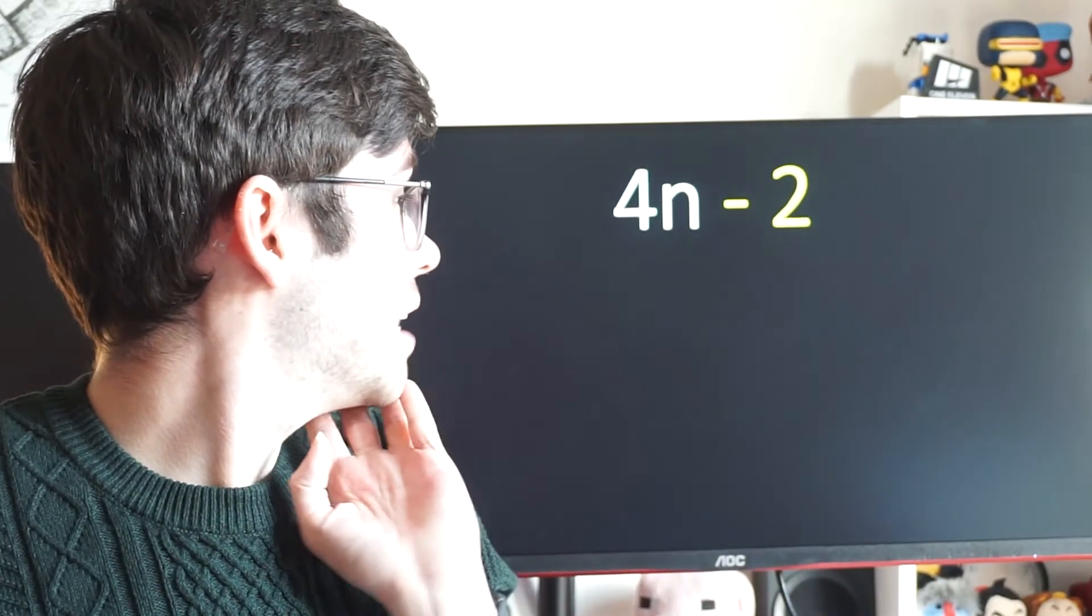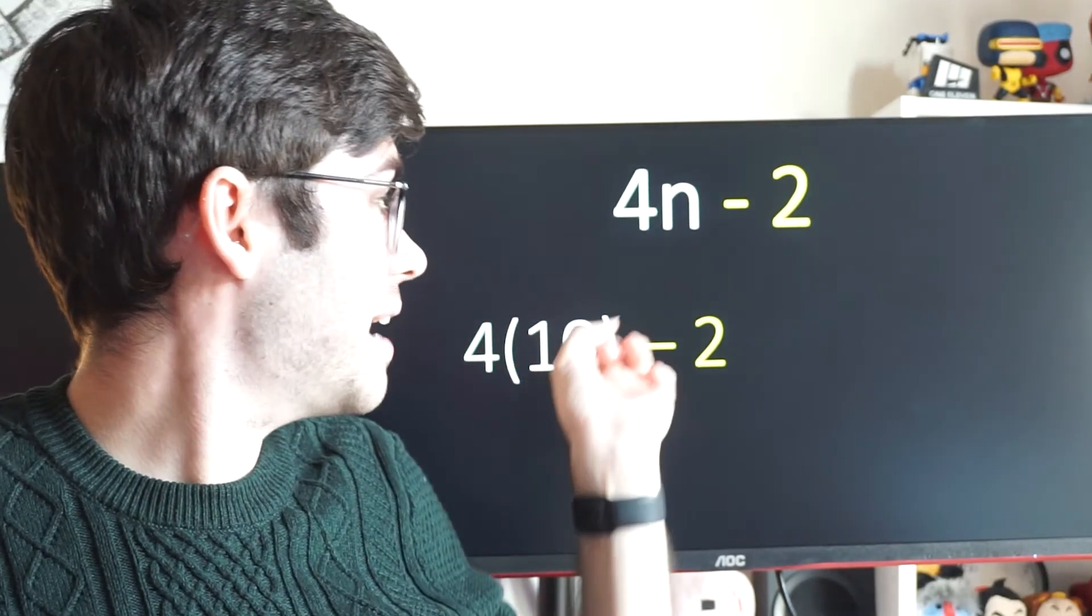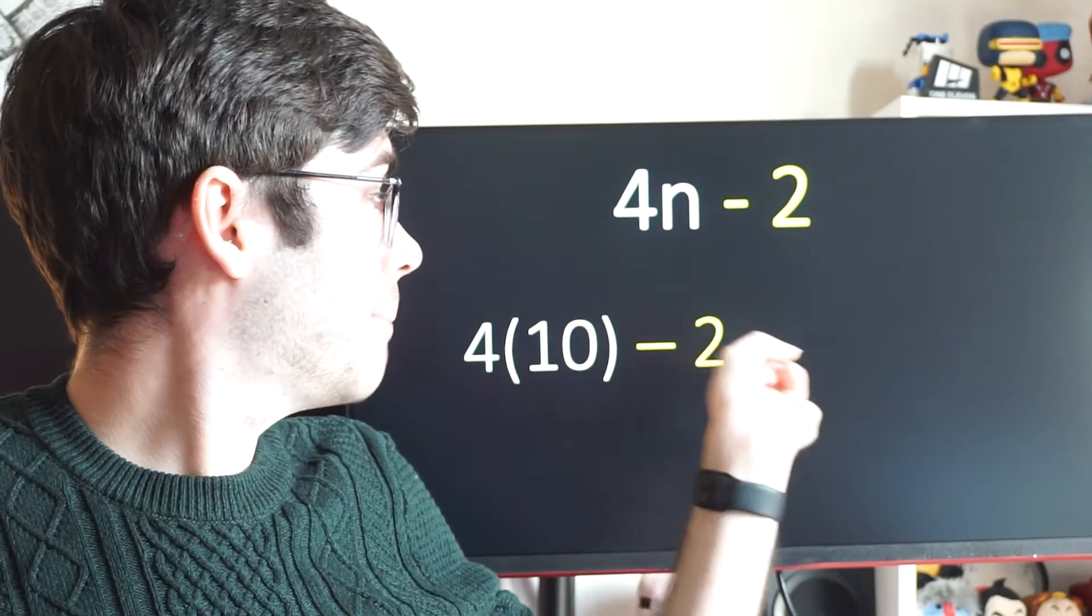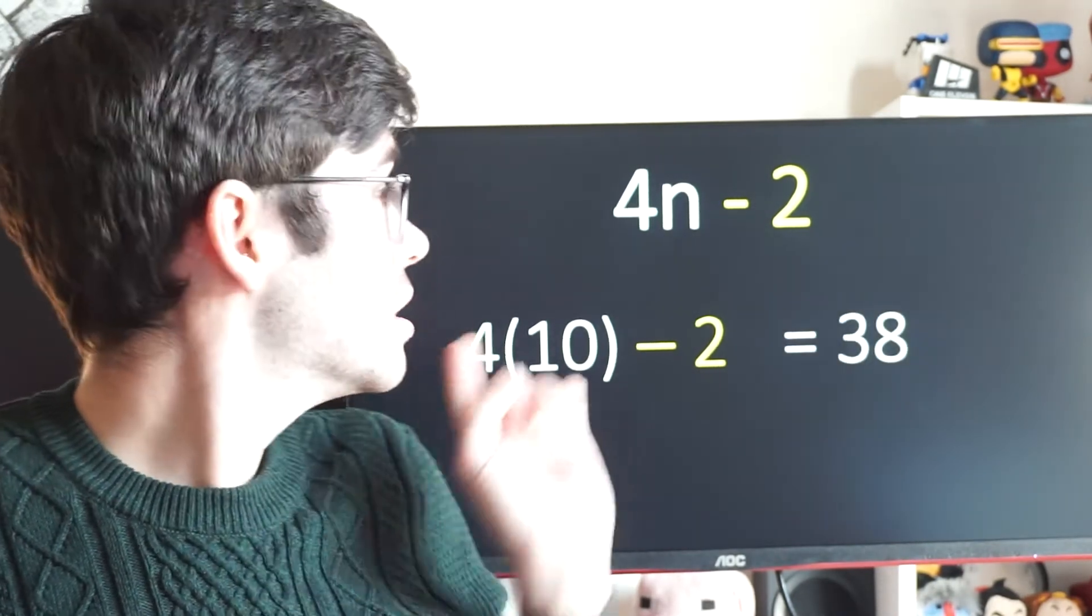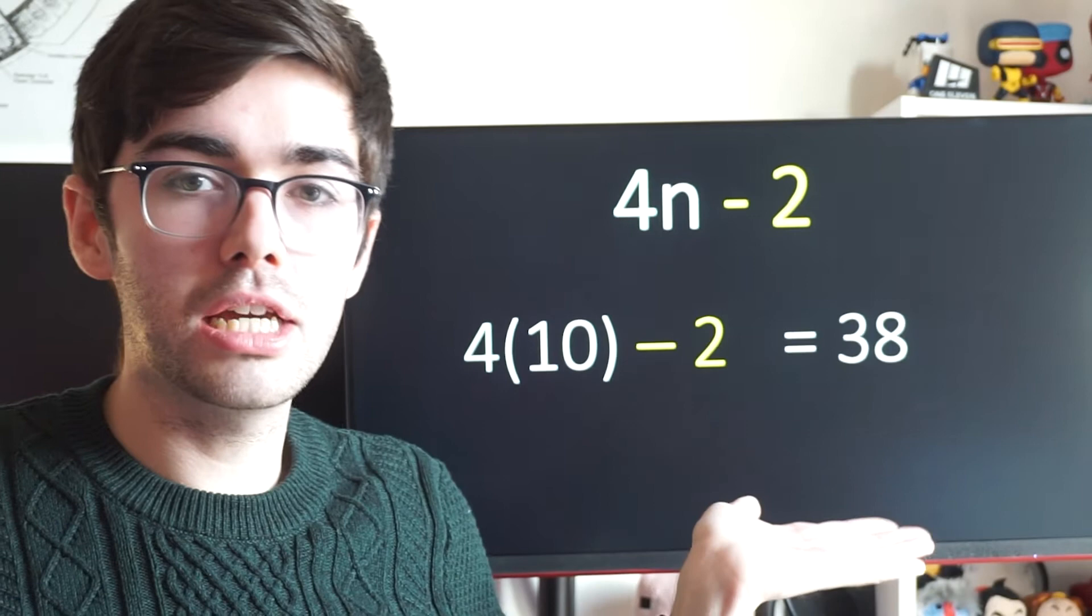So if I make n equal to 10, I'll get this. 4 times 10 minus 2, which gives me 40 minus 2. Remember, BIDMAS. The answer would be 38. So the 10th term of this sequence is 38.